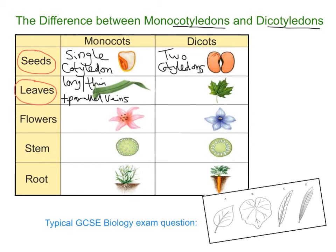In comparison, dicotyledon leaves vary in shape — they're not just long and thin. But again, it's the veins that are important. Here we have branched veins, so they're not running parallel to one another but form a branched network of veins. At the bottom of the screen you can see a typical GCSE biology exam question, which we're going to talk through in relation to the leaves at the end of this video.